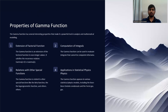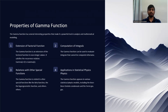Let's move on to the gamma function and its properties. The gamma function has several interesting properties that make it a powerful tool in analysis and mathematical modeling. The first property is that it is an extension of the factorial function to non-integer values, satisfying the recurrence relation: Gamma(z+1) = z · Gamma(z).